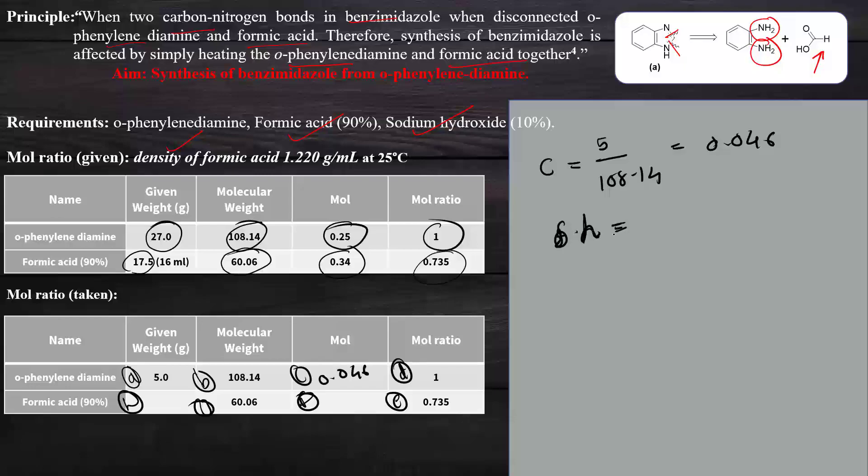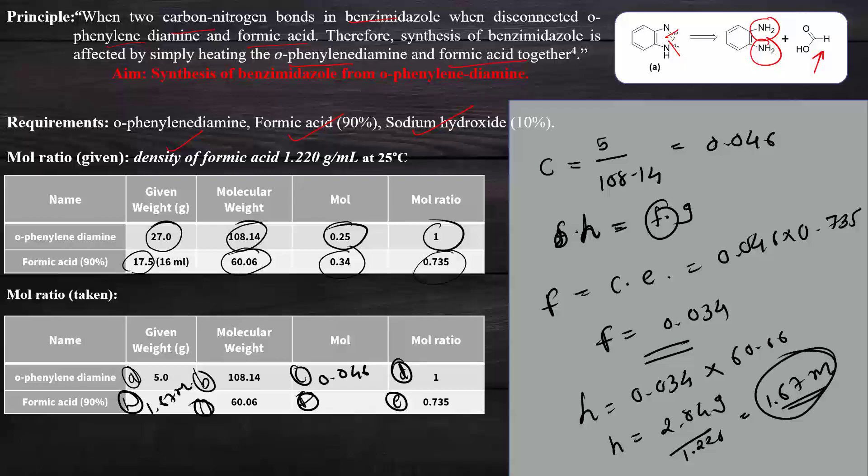Here we want H, which means the weight of formic acid or ml of formic acid. We can get this with the help of calculations. If we multiply F and G we get H. But first we find F, which equals C times E. C is 0.046 and E, the mole ratio derived from the previous table, is 0.735. We get F equals 0.034. When we multiply this mole of formic acid with molecular weight 60.06, we get 2.04 grams. Dividing by density 1.220 gives 1.67 ml of formic acid.